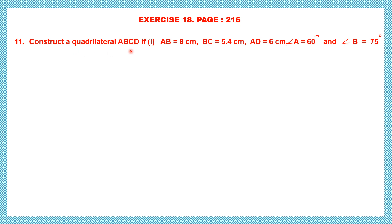Construct a quadrilateral ABCD if AB is 8 cm, BC is 5.4 cm, AD is 6 cm, angle A is 60 degrees and angle B is 75 degrees. So we have to construct a quadrilateral with all these measurements.